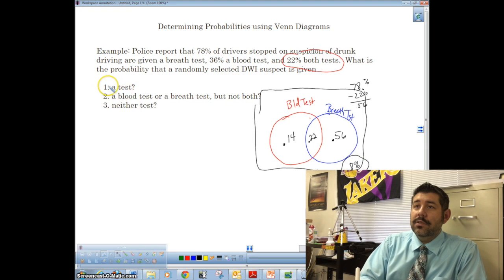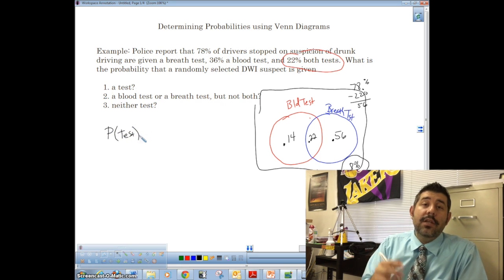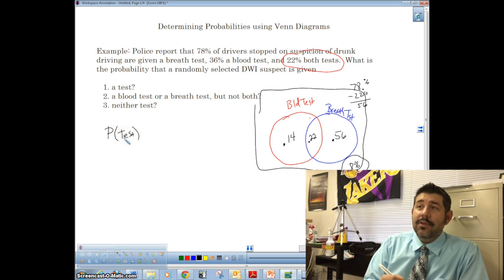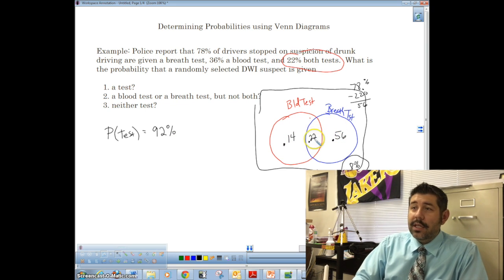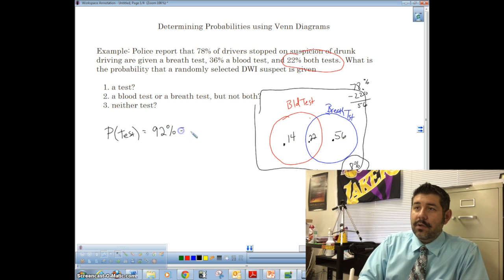So let's go ahead and answer the questions. What is the probability that they get a test, some sort of test, either test, right? So the probability that they get either test is 92%, okay? Because they could get a blood test, they could get a breath test, or they could get both tests, right? So it's a probability of this plus this plus this.